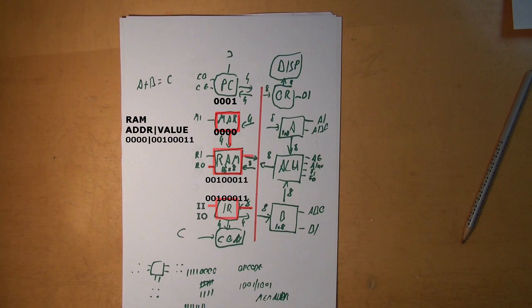Keep in mind that this value is the command we want to execute — the first four digits are the opcode, the next four are a memory address. In our case, the command is 0010, which means load a number from RAM to A, and the memory address is also 0010. Fourth step: IO and MI are enabled — the memory address in the instruction register is transferred to the memory address register, pointing to the 8-bit number which is A. Fifth step: RO and AI are enabled — the number at that memory address is transferred to the A register.